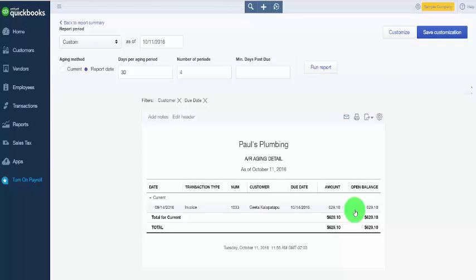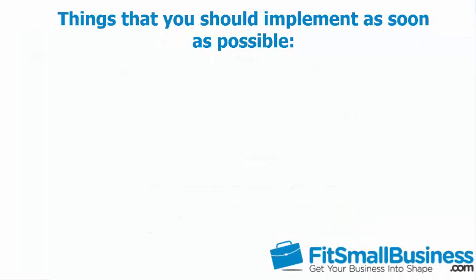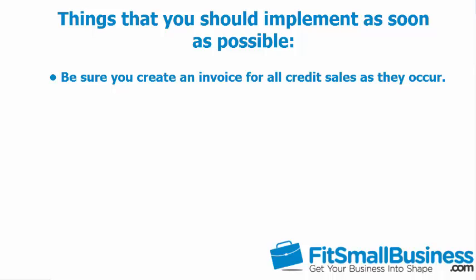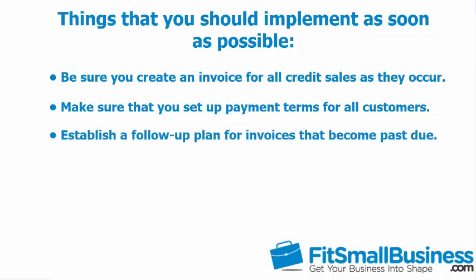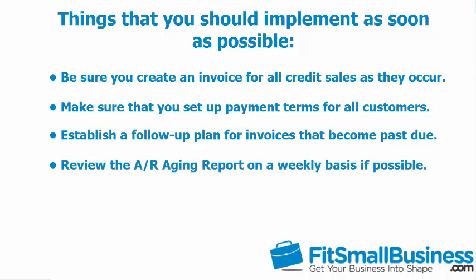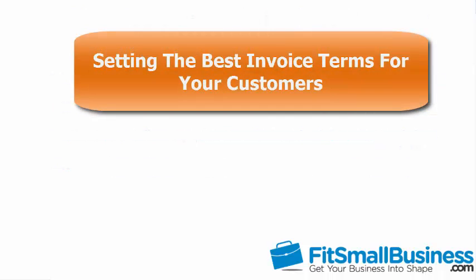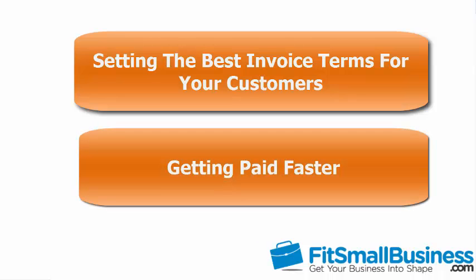By now you have a good idea of how the AR aging summary report can help you to stay on top of unpaid invoices so that you can get paid in a timely manner. Here are a few things you should implement as soon as possible: First, create an invoice for all credit sales as they occur. Make sure you set up payment terms for all customers. Establish a follow-up plan for invoices that become past due — what action will you take when they are in each bucket: 1-30 days, 31-60 days, etc. Review the AR aging report on a weekly basis if possible. For more tips, check out our article on setting the best invoice terms and getting paid faster. Click here to access these articles.